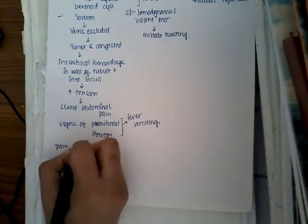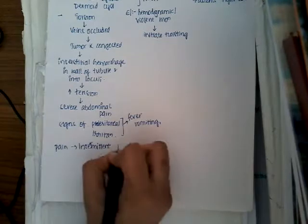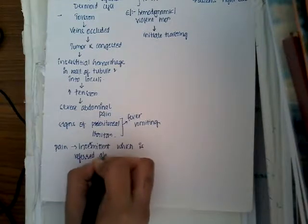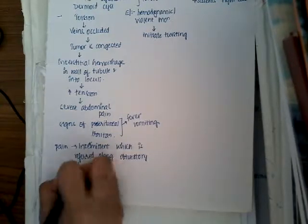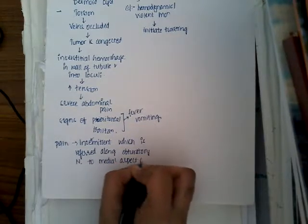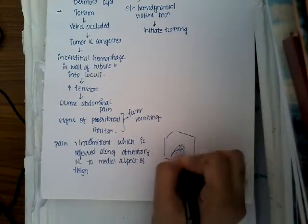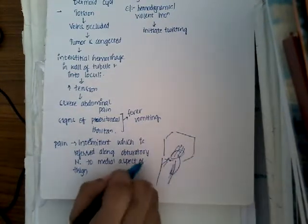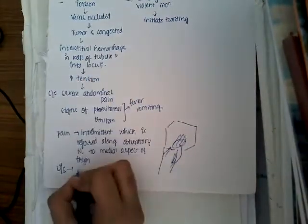There can also be intermittent pain which is referred along the obturator nerve to the medial side of the thigh. So the patient mainly has pain in the abdomen which radiates to the medial aspect of the thigh. On ultrasonography you will see a swollen, edematous ovary.